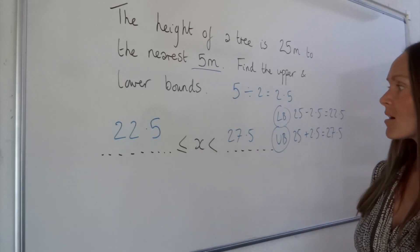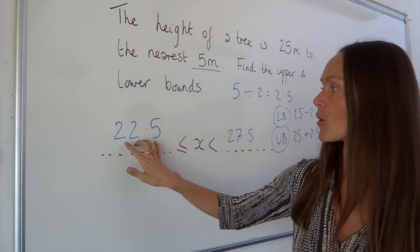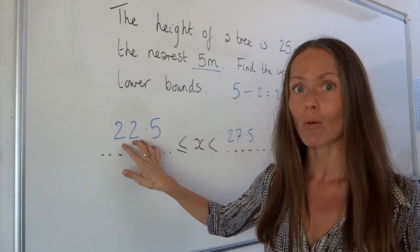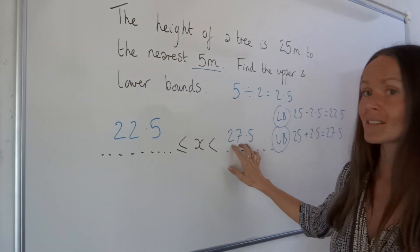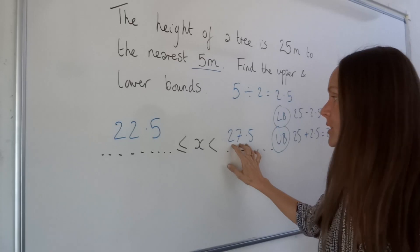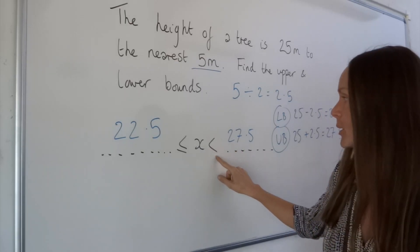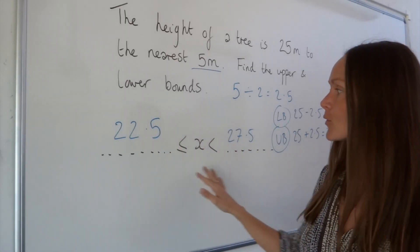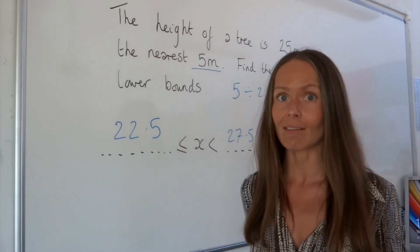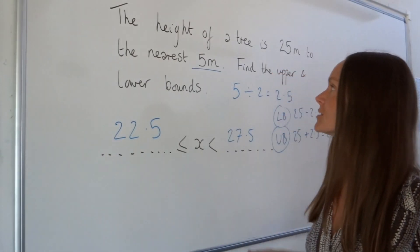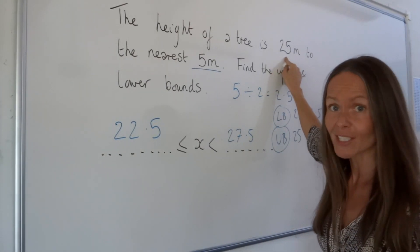That means the tree could have been anything from 22.5 metres all the way up to 27.5 metres, but not including that number. If we rounded any of those numbers in that region to the nearest 5 metres, it should round to 25 metres.